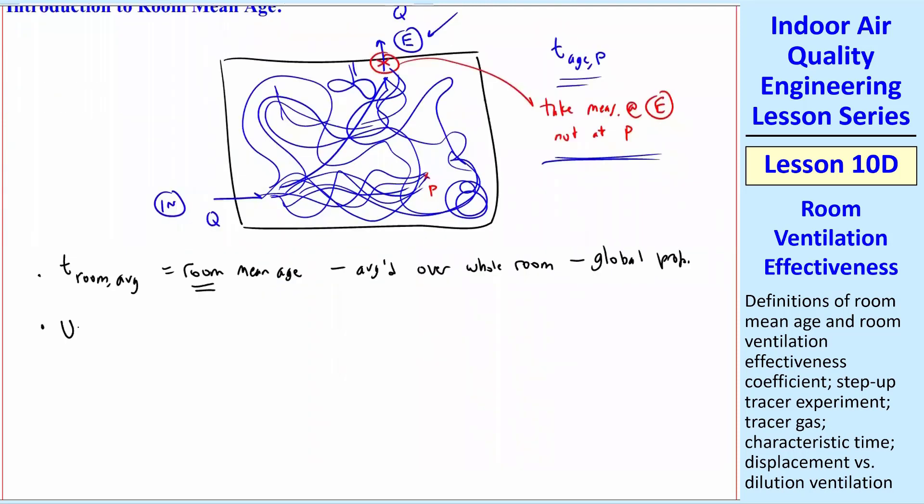To measure this, we do the same thing we did for the one at point P, and that is we use a step-up tracer experiment, where we inject a tracer. It's called step-up, because we're going to have air coming in with some concentration C, so C equals zero at the inlet until time T equals zero, and then C equals some constant from then on. So we just add SF6 or helium or something that we can measure, and usually something not very harmful.